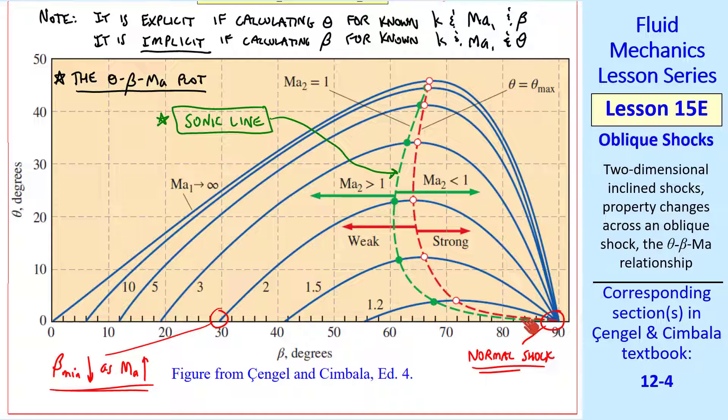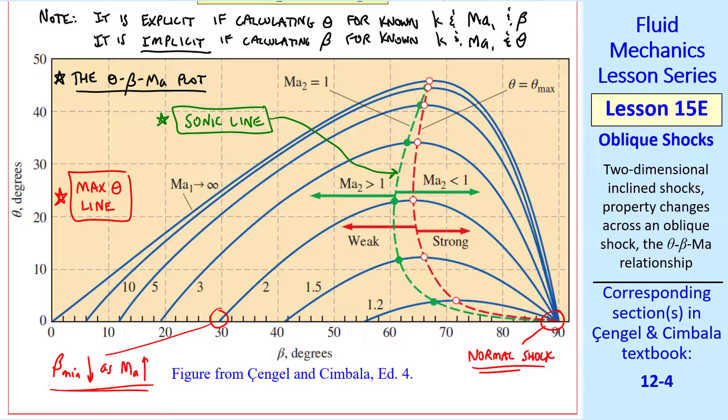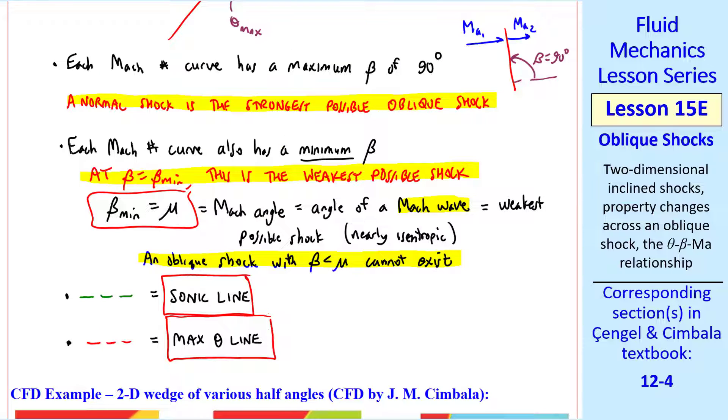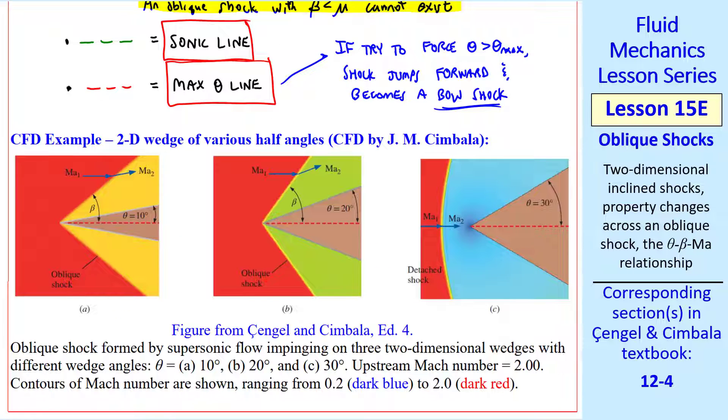There's also a dashed red line, where all we've done is connect the points of theta max for each Mach number. For lack of a better term, we call it the max theta line. Again, it's actually a curve. For any beta to the right of this red line, we call it a strong shock. And for any beta to the left of this line, we call it a weak shock. My comment is that the dashed red line is called the max theta line. If you try to force theta greater than theta max, the shock jumps forward and becomes a bow shock.